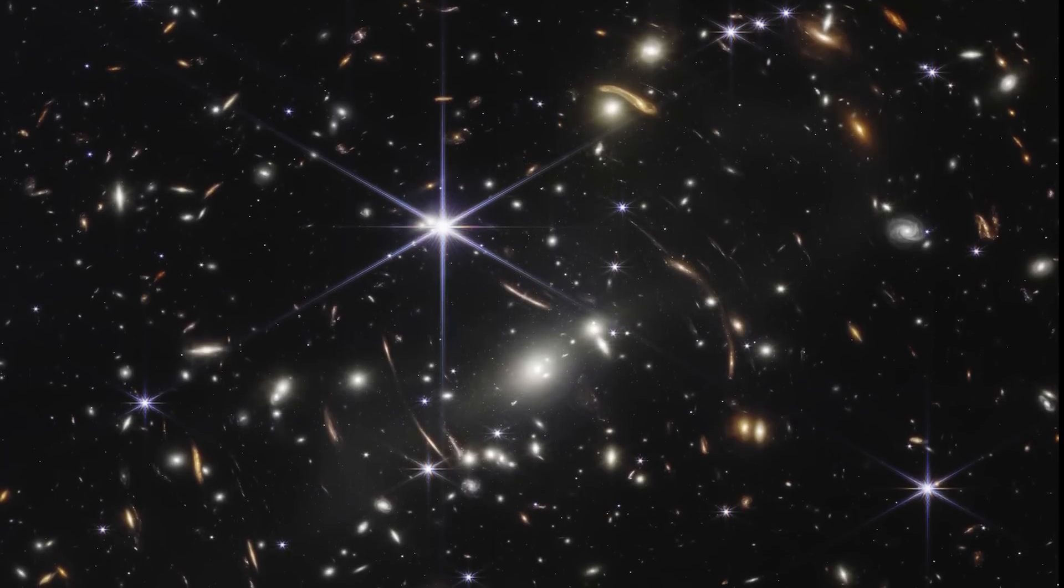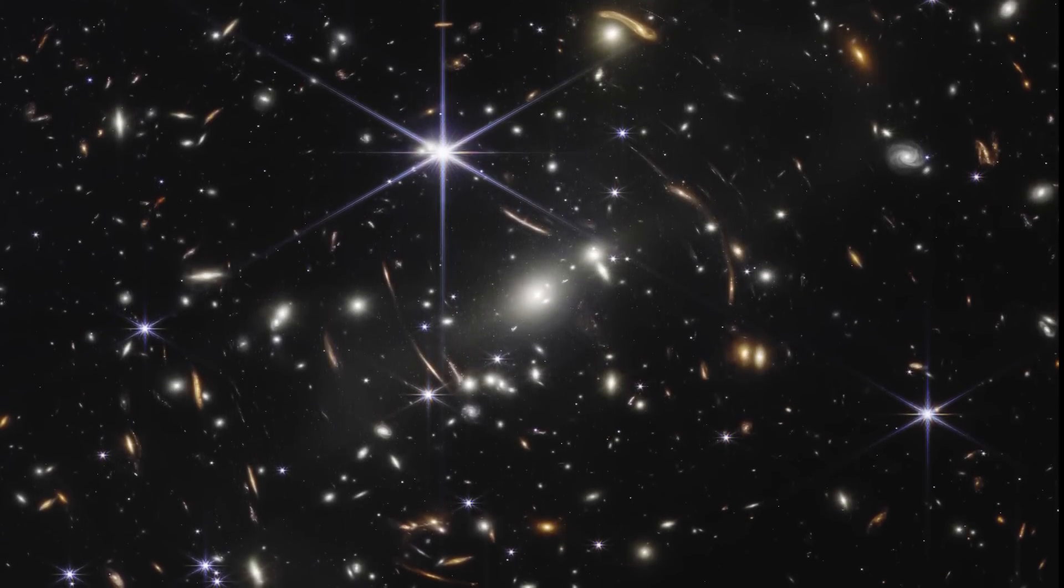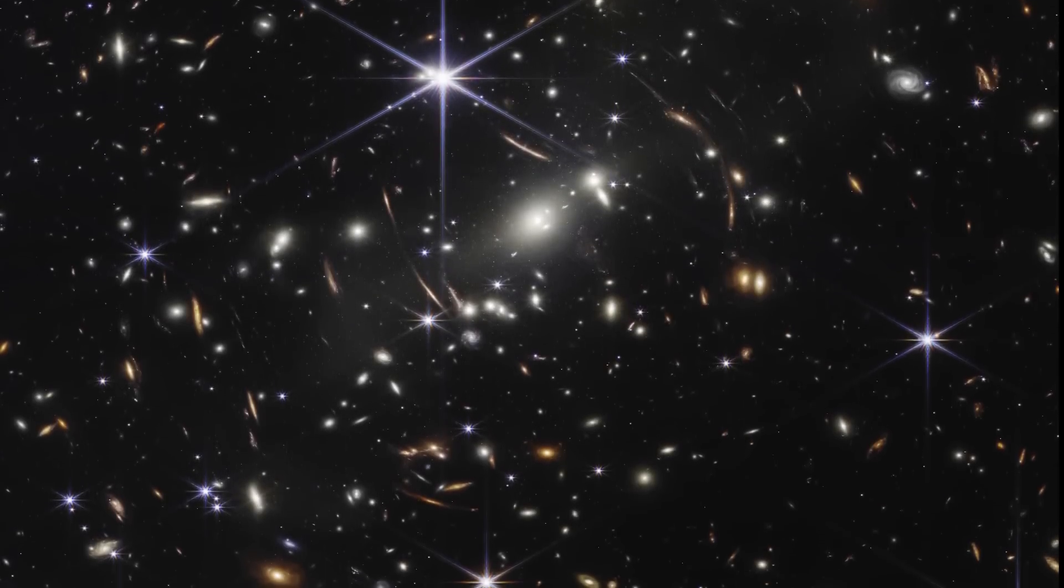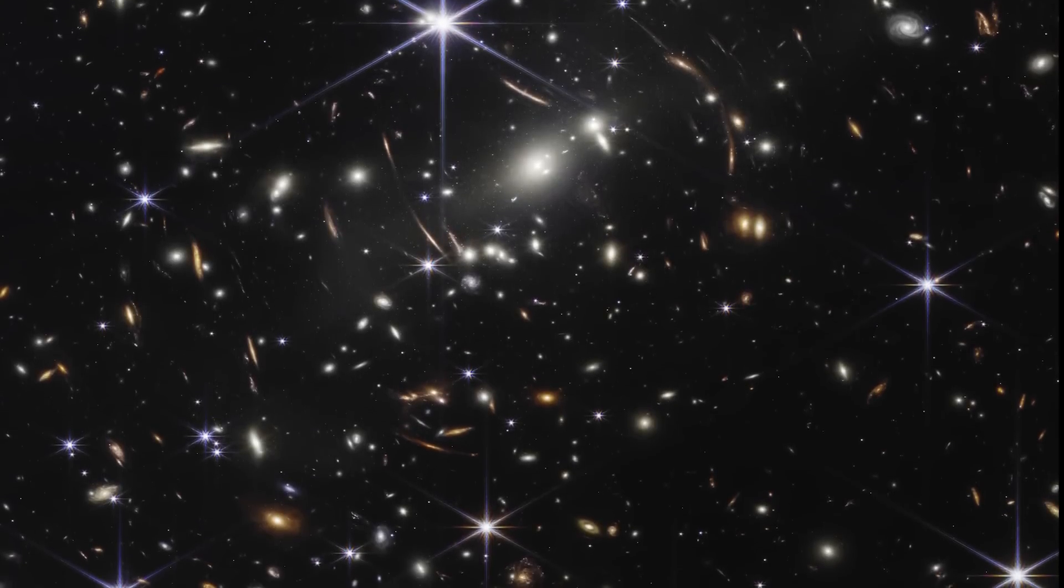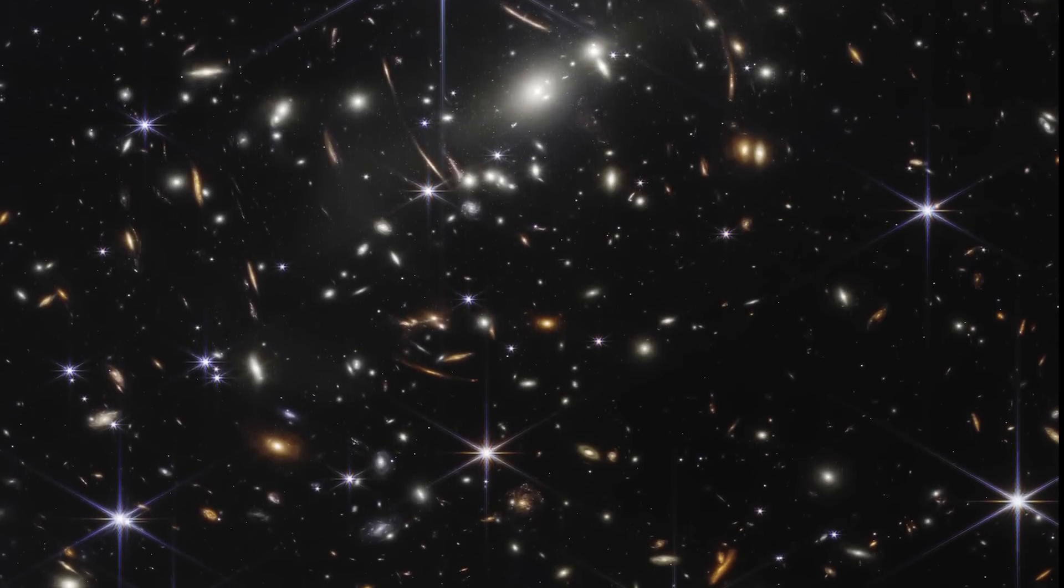JWST's first deep field image gave us a beautiful vista, extreme gravitational lensing, images of the tiniest, faintest and most distant objects ever observed, and even spectra of ancient galaxies. But what have we learned about this patch of space since the preview image was released early?